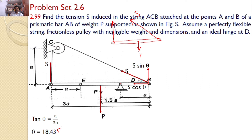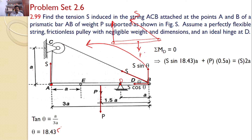The S force can be resolved into horizontal and vertical components. The horizontal component is S·cos(theta) and the vertical component is S·sin(theta). Now, considering moments about D: S·sin(theta) introduces a moment in the counterclockwise direction over distance A. So, S·sin(18.43°) × A, plus P multiplied by this distance — which is 0.5A — is equal to S multiplied by the total distance.